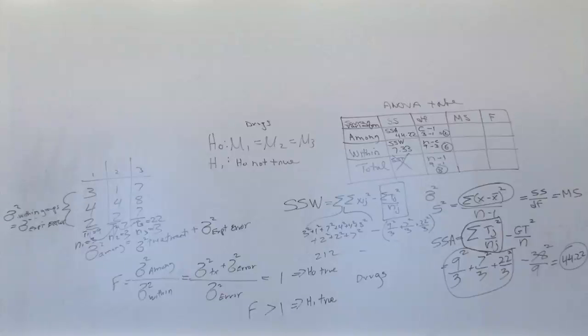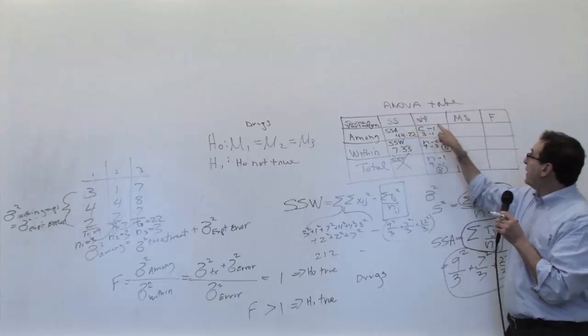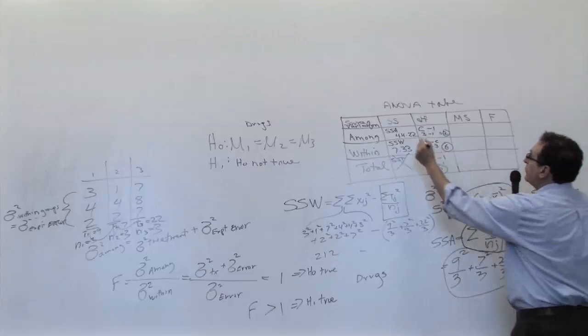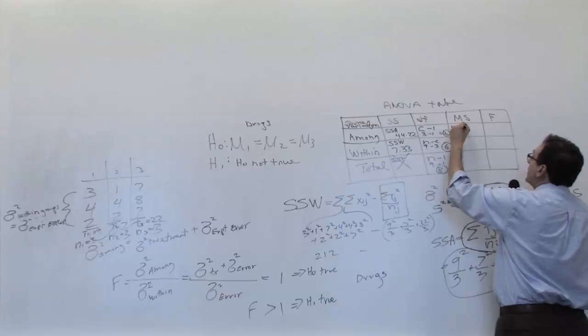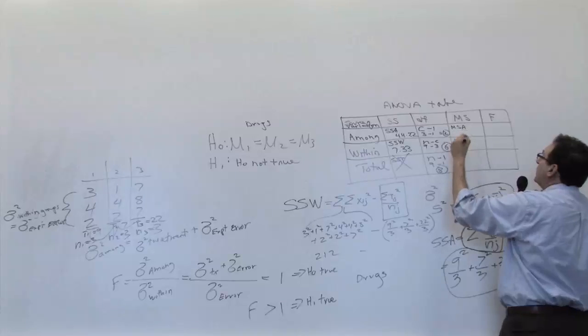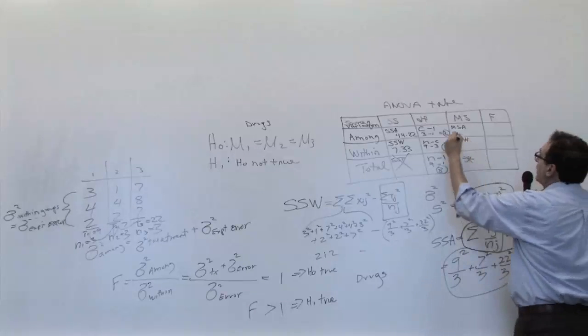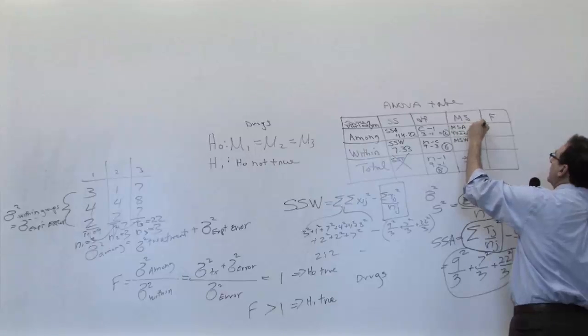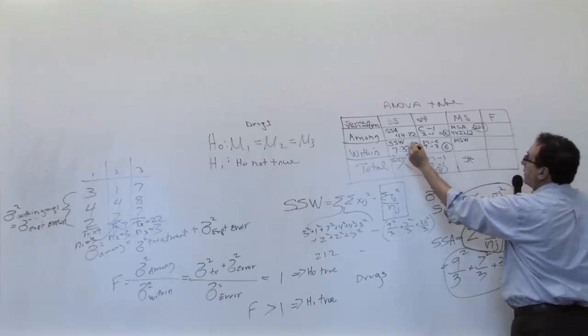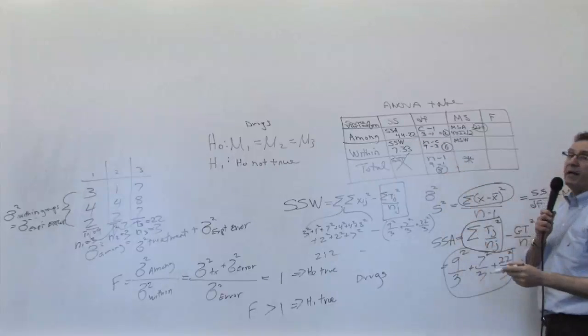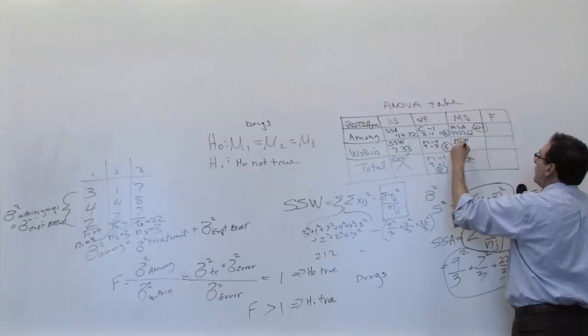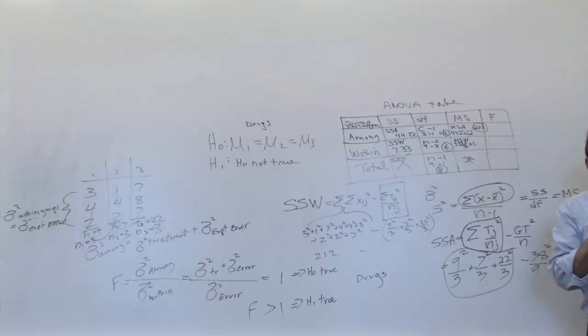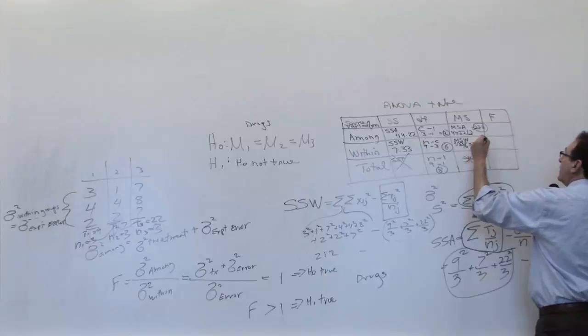But I'm pretty sure it's 7.33. Now we're ready to do the easy part of it, which involves three divisions. It involves this divided by that, this divided by that, and finally this divided by that will come over here. So let's do, this is called the MSA, the mean square among. This is called the MSW. This we don't bother filling out. And the MSA is going to be 44.22 divided by 2, which of course is 22.11. That's our first key number. This MSW is going to be, the MSW is SSW divided by N minus C, which is 7.33 divided by 6, which comes out to 1.22.